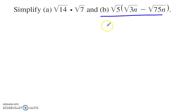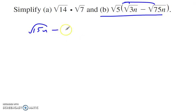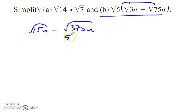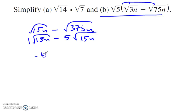Using this, we'll do example b. Use the distributive property first: 5 times radical 3n is 15n... 5 times radical 75n is radical 375n. Now these aren't the same radicand, but I can factor a 5 out of 375n. Sometimes it helps to look at the other term and ask: can I make this radical 15n? Yes, if I factor out a 5: that's radical 5 times radical 15n. Now I have 1 times radical 15n minus 5 times radical 15n, giving negative 4 radical 15n.